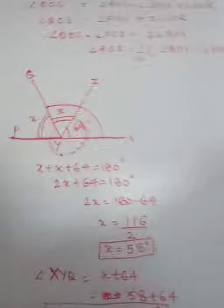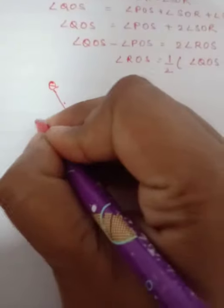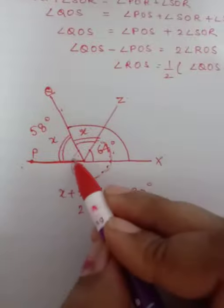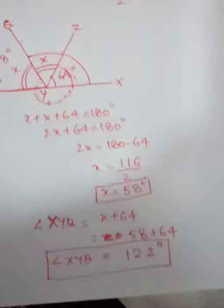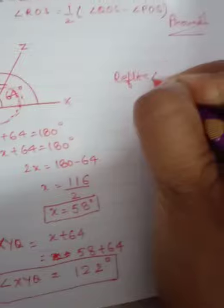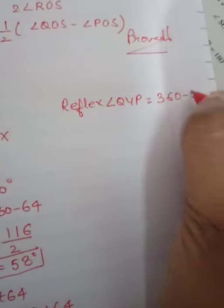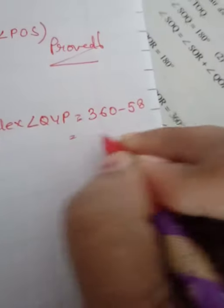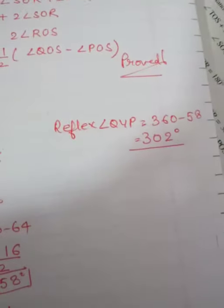Now after that you have to find reflex of QYP. Now here QYP, you already have found X equals to 58, this is 58 degrees. So reflex means we have to subtract this from 360. Reflex nikalne ke liye 360 se subtract karna hota hai. It means reflex of angle QYP equals to 360 minus 58, so this is 302 degrees. So reflex of QYP equals to 302 degrees.